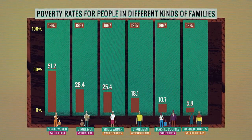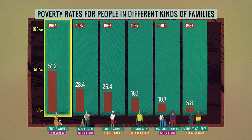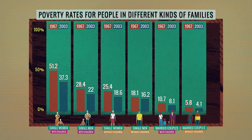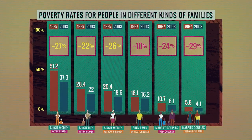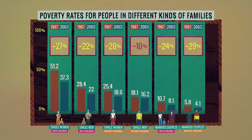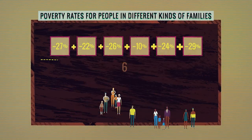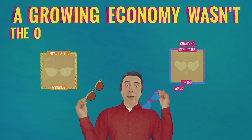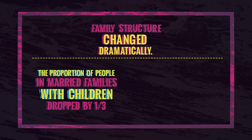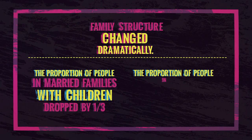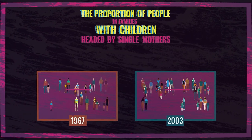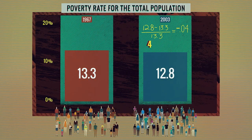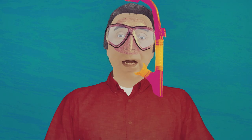Let's start with 1967. Over half of all single moms with children were poor. One in 10 of those who were married with children were poor. 36 years later, what happened to the poverty rate — the percentage of individuals below the poverty line? For people in five of the six kinds of families, the poverty rate fell by more than 20%. So how much did the poverty rate fall for the entire population? Should be something like 20%, right? But a growing economy wasn't the only thing that happened between 1967 and 2003. The proportion of people in families with children headed by single mothers — the group with the highest poverty rate — doubled. So the overall poverty rate barely budged. It fell by only four percent. Four percent? That's basically no change at all.